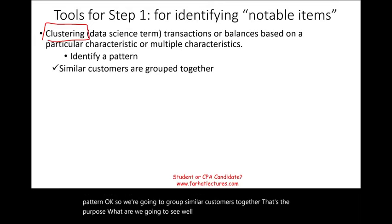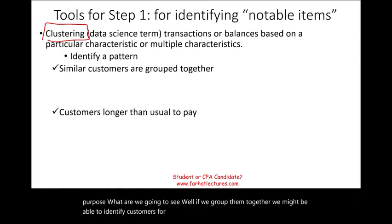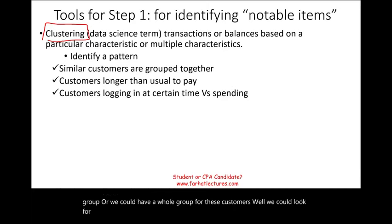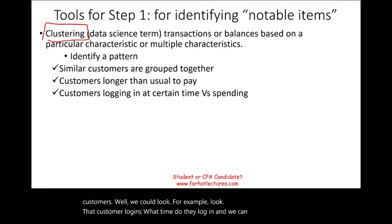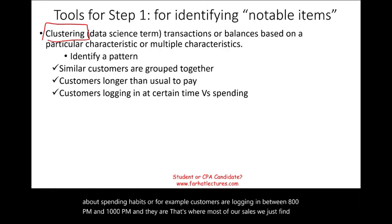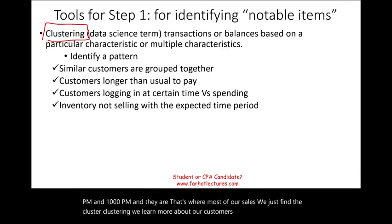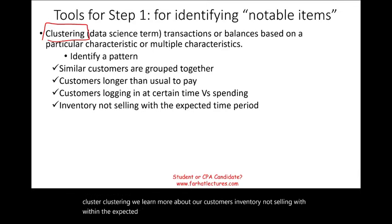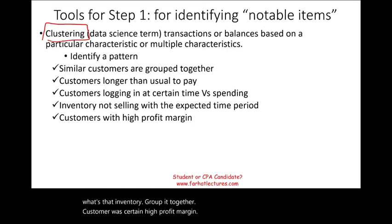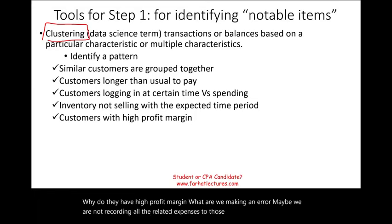What might we see? If we group them together, we might be able to identify customers that are taking longer than usual to pay. We might look at customer logins — what time do they log in — and find information about spending habits. For example, customers logging in between 8 p.m. and 10 p.m. represent most of our sales. We could also identify inventory not selling within the expected timeframe, or customers with a certain high profit margin — are we recording all related expenses, or overstating revenue for those customers? The group might be unusual by itself, or we might notice something unusual within the group.